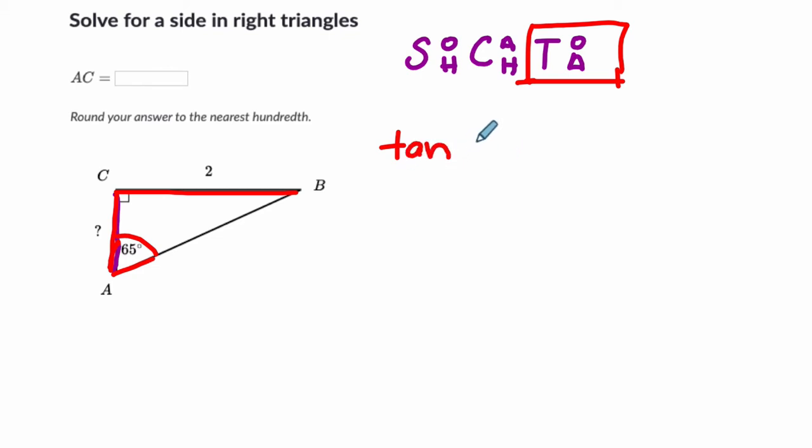I'm looking at the tangent of 65 degrees. And that's going to equal the opposite side over the adjacent side. So 2 over AC, which I'll call X here. It's the unknown. And now I just want to solve for X.